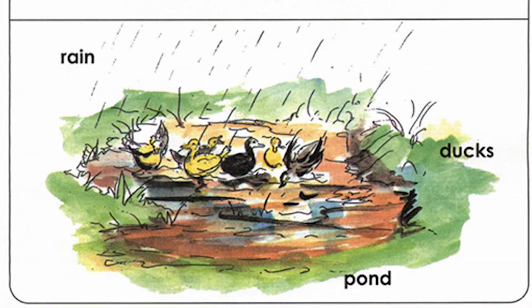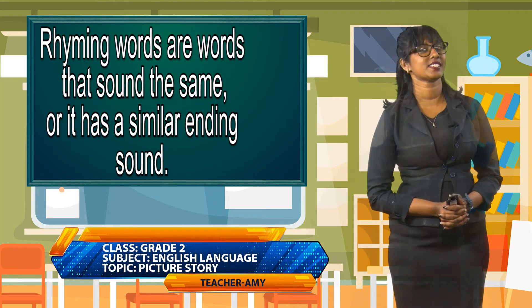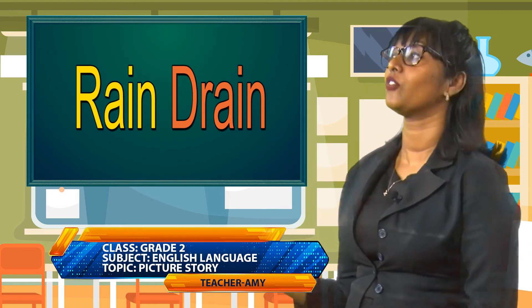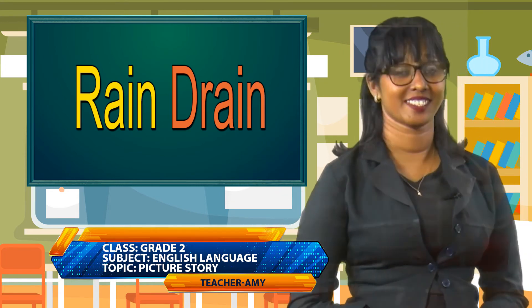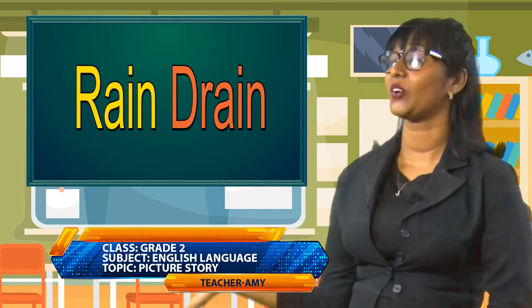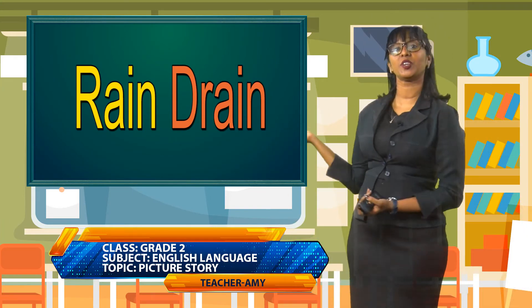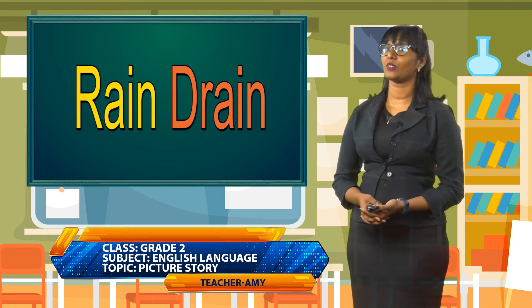Boys and girls, I want you to write one sentence about picture number two using some rhyming words. Do you know rhyming words? Rhyming words are words that sound the same — they have a similar ending sound. For example, we have rain and drain. Say the words with me: rain, drain. These two words are called rhyming words because they sound similar.